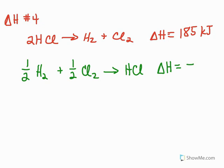And then the other thing we noticed is that they have multiplied through everything by one half, or divided by two, either way you want to think about it. So we can take one half times 185, and that's going to give us a negative 92.5 kilojoules for the delta H of the new equation.